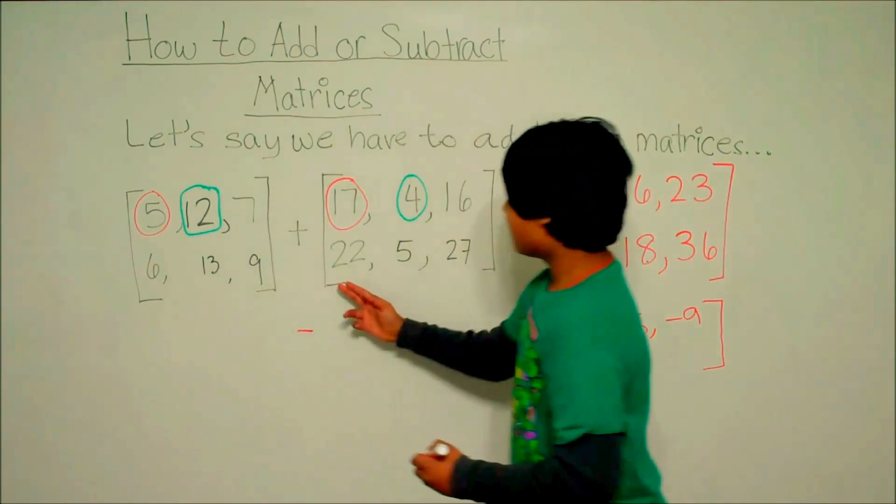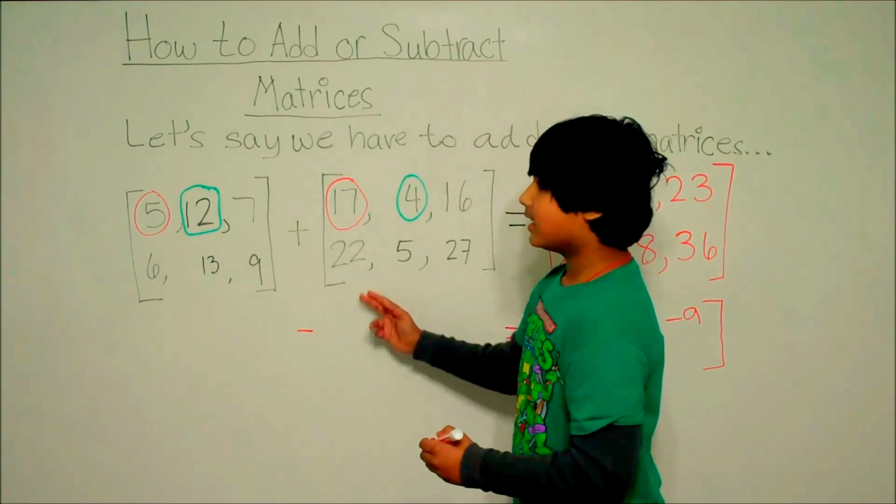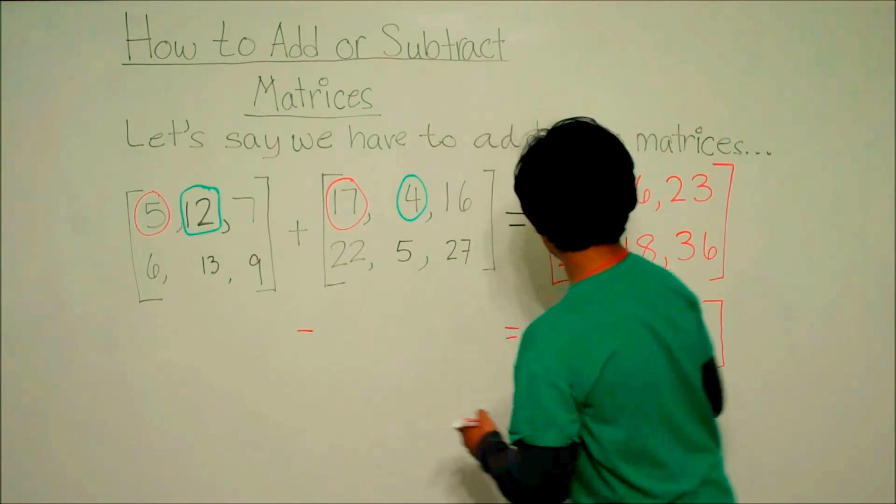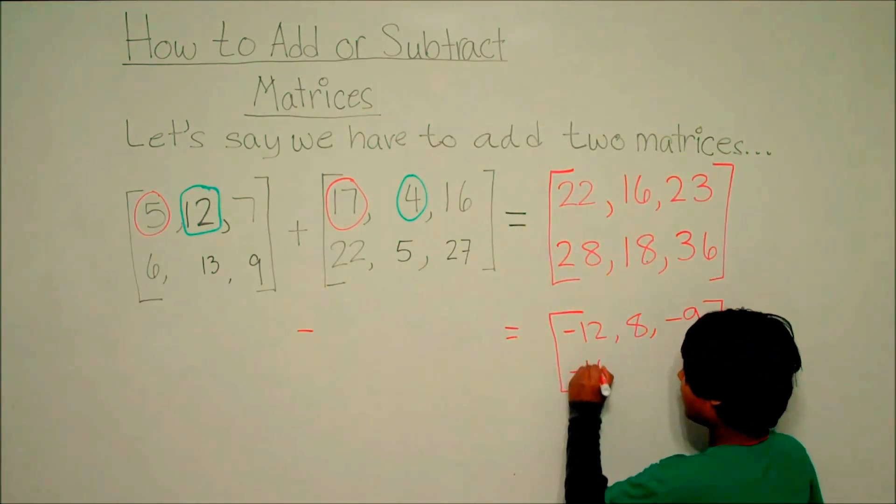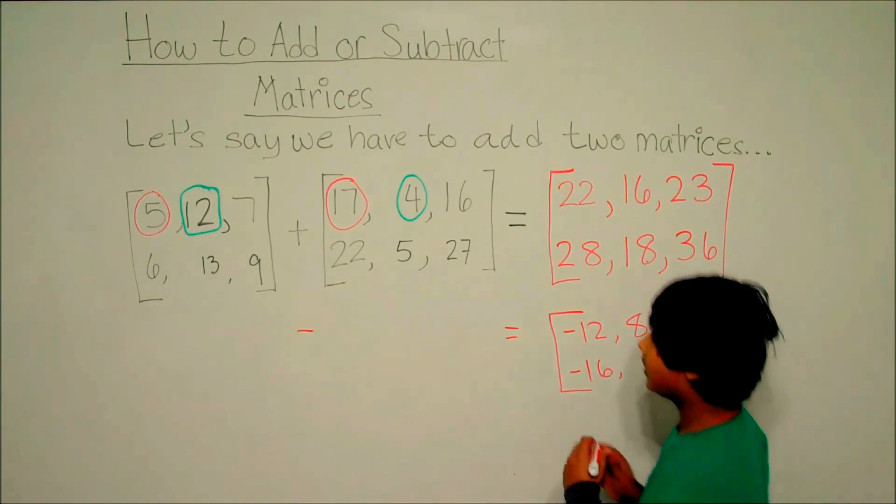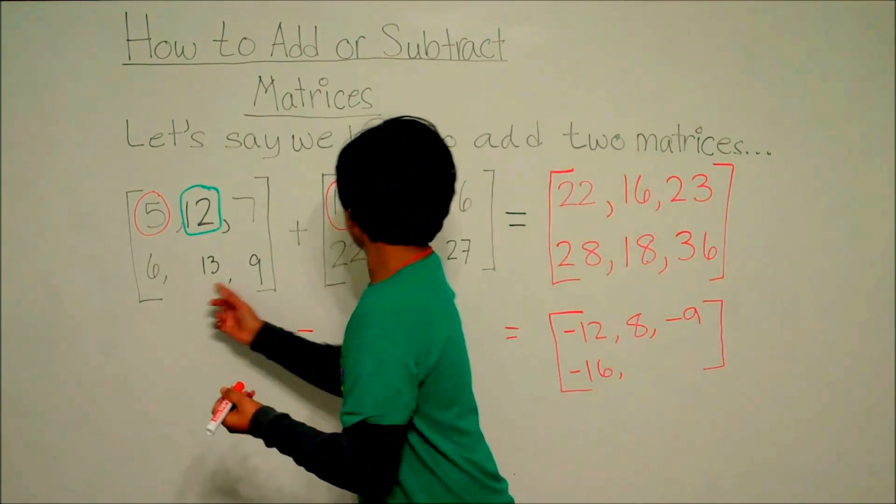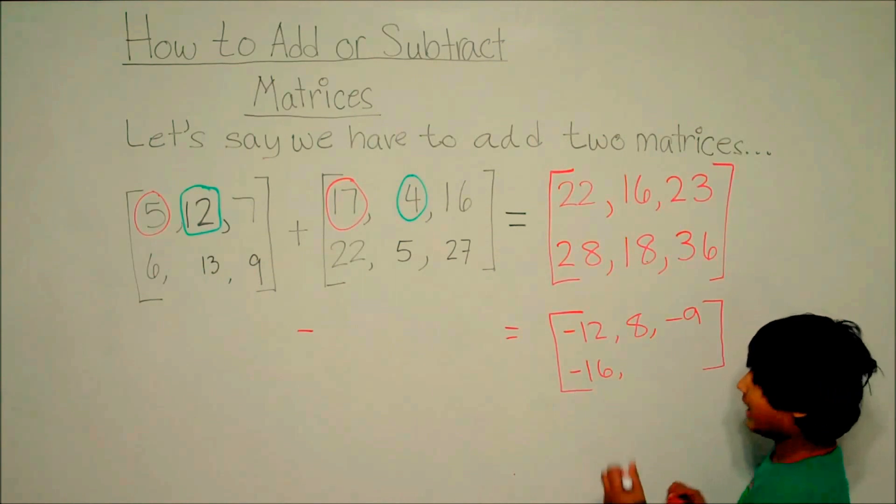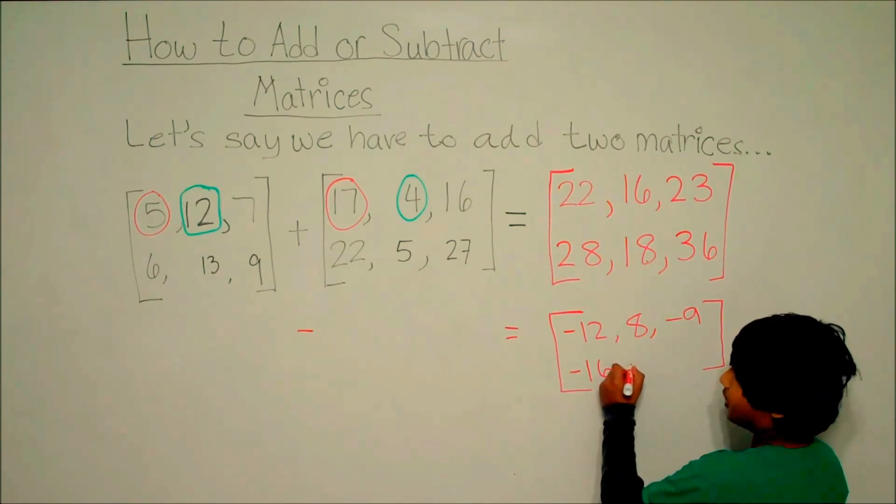So, 6 minus 22 is negative 16. 13 minus 5 is 8.